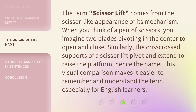The term scissor lift comes from the scissor-like appearance of its mechanism. When you think of a pair of scissors, you imagine two blades pivoting in the center to open and close. Similarly, the crisscrossed supports of a scissor lift pivot and extend to raise the platform, hence the name. This visual comparison makes it easier to remember and understand the term, especially for English learners.